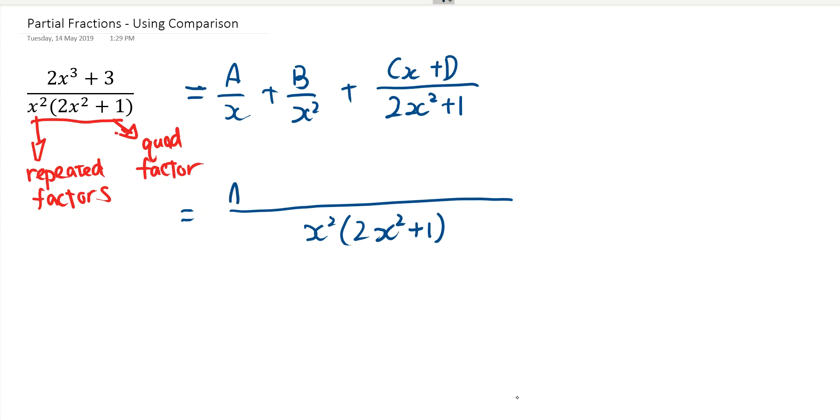So for a, we need to multiply by x and 2x squared plus 1. For b, we need to multiply by 2x squared plus 1. And for cx plus d, we need to multiply by x squared.